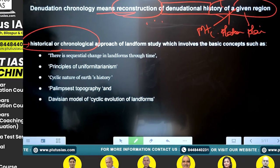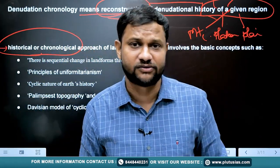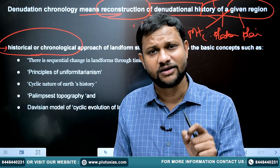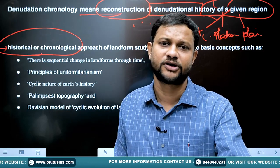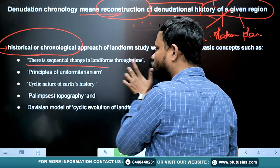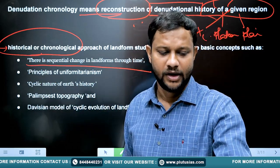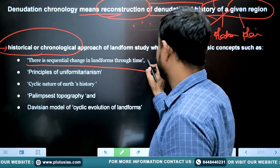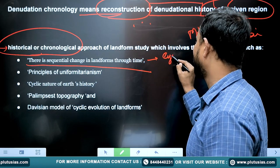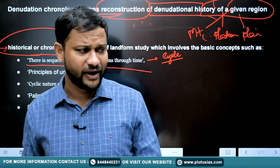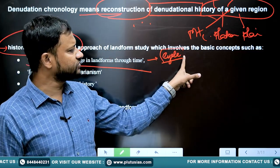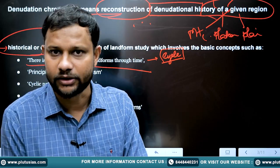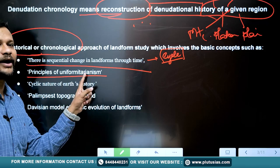To trace these denudational events or the removal history, we have to believe in certain founding principles of denudational chronology. The first principle is sequential change in landforms through time. There are two schools of thought regarding landform evolution: one believes in cyclic or stage-wise transformation of landforms, and the other believes in consequential changes.